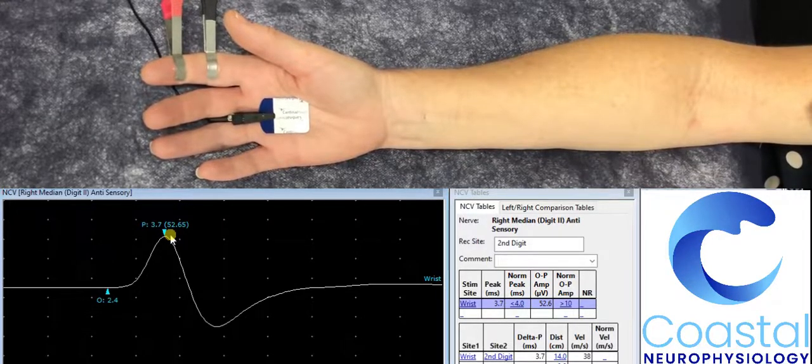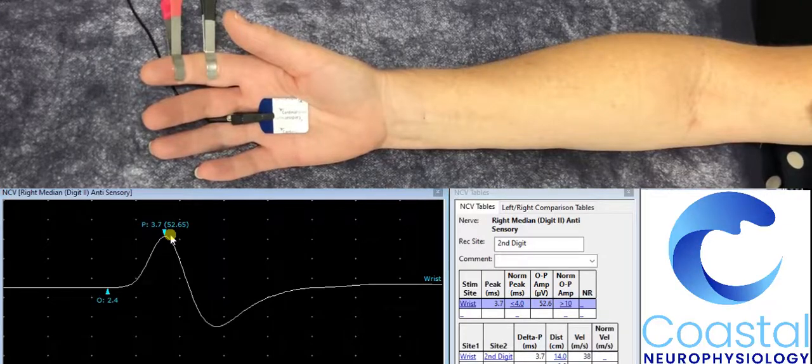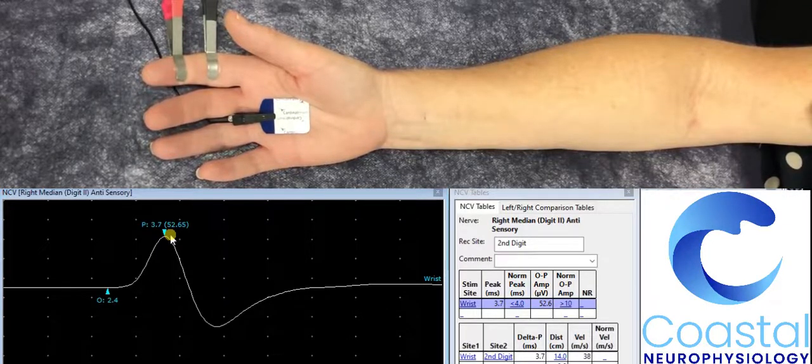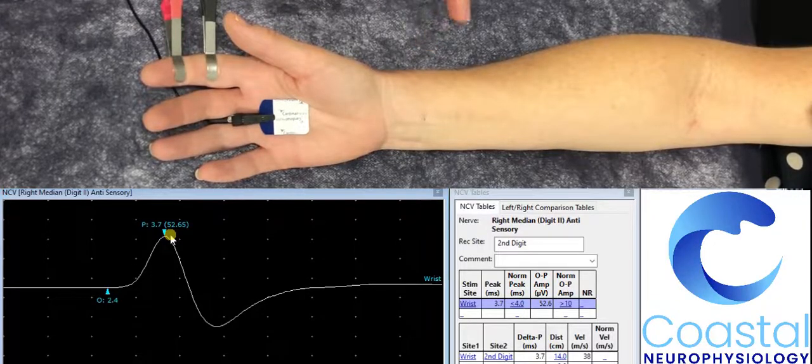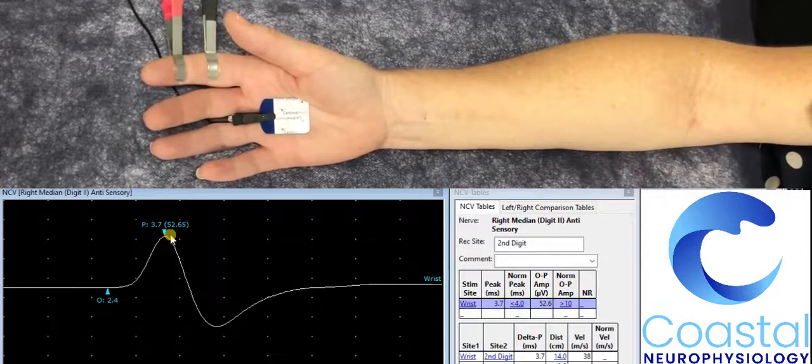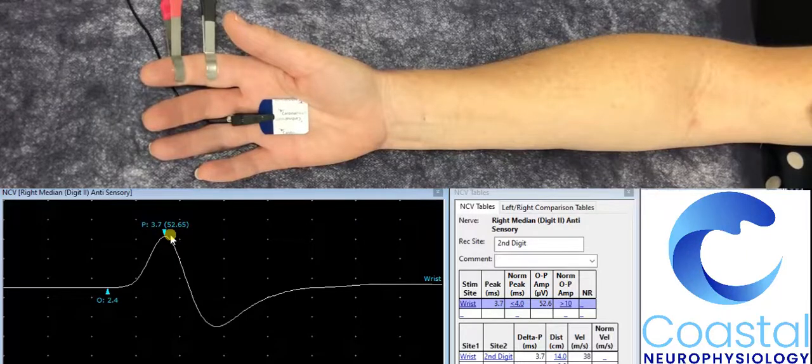These are the two most important characteristics of a sensory nerve: the size of the sensory signal and also the time it took to get the signal from the stimulus point at the wrist into the finger. This tells us the speed of the conduction of the nerve.